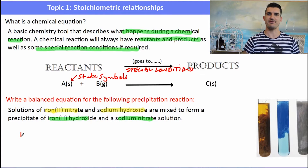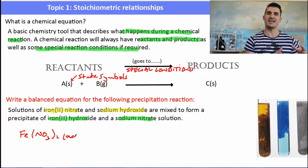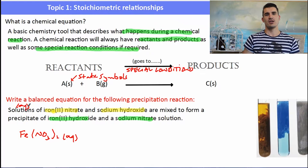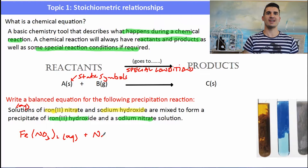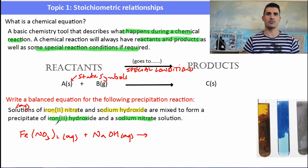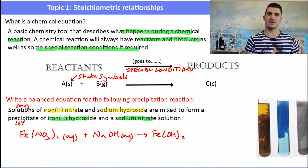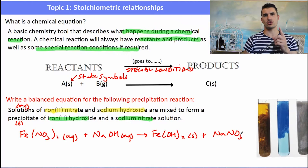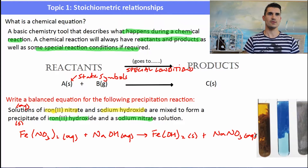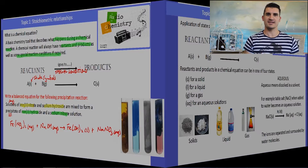The reactants are highlighted in yellow and products in green. Iron(II) nitrate is Fe(NO3)2 because iron has a 2+ charge and nitrate has a minus charge — it's a solution so it's aqueous. Sodium hydroxide is NaOH, also aqueous. The products: iron(II) hydroxide is Fe(OH)2, which is a precipitate so it's solid. Sodium nitrate is NaNO3. Don't forget to balance the equation.